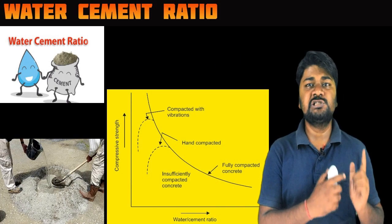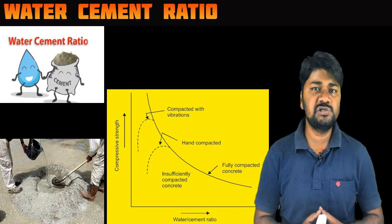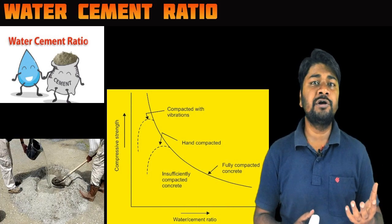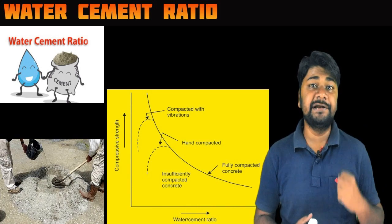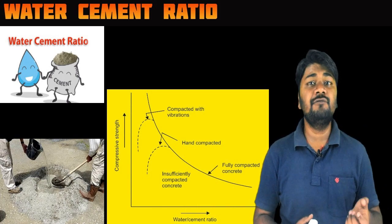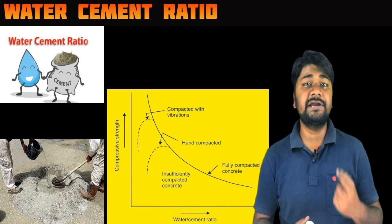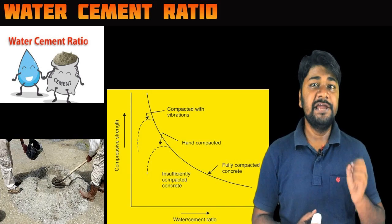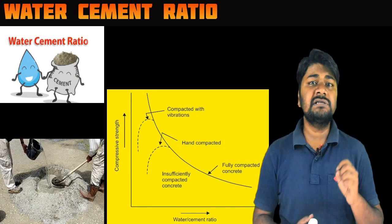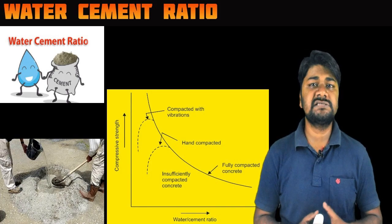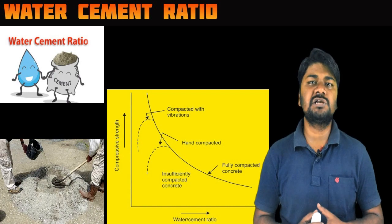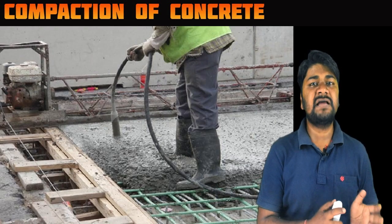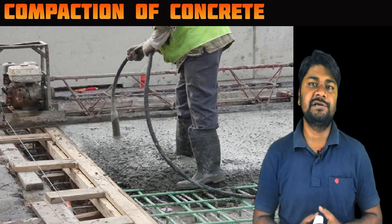You can check this chart: when the water-cement ratio is increased, the strength of concrete decreases, and when the water-cement ratio is decreased, the strength of concrete increases. This means the water-cement ratio is inversely proportional to the strength of concrete. Number two is compaction of concrete.